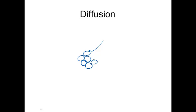If we draw a little cluster of alveoli — the little air sacs in your lungs — these are connected to capillaries that carry blood back to your body. The O2 concentration is higher outside the cells, so it's going to diffuse in, and the CO2 is going to diffuse out.